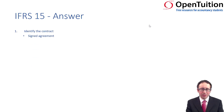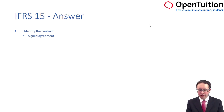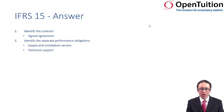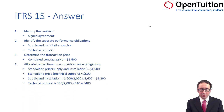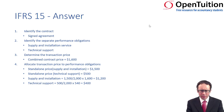Starting the answer: identify the contract — probably under a signed agreement, particularly if there is technical support involved, which will need to be agreed and signed. Then identify the performance obligations — the installation service and the technical support. The transaction price is the combined price at $1,600. And then you need to allocate it based on the standalone prices: $1,500 for supply and installation, and $500 for technical support.